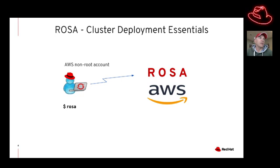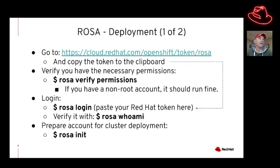We're going to deploy ROSA on AWS using your AWS non-root user and the ROSA command. The first step is to download your Red Hat key token and copy it to the clipboard from this link. Once you've got the binary installed, you can type ROSA verify permissions. This will verify that you have a non-root user, and if you do, it'll run fine.